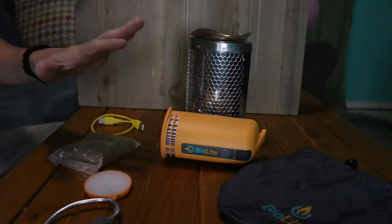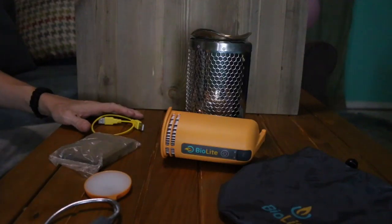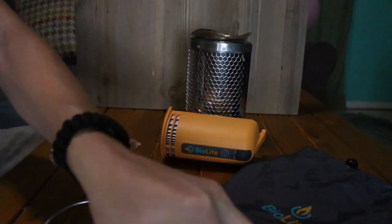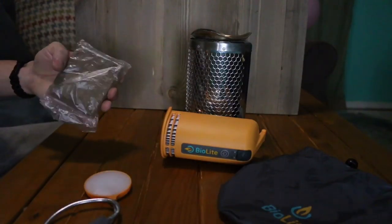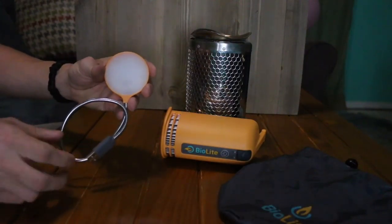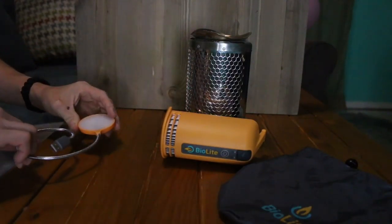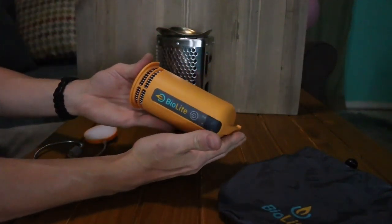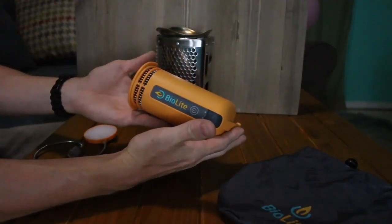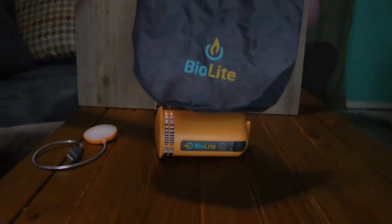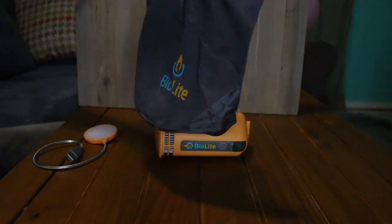So all this right here is what you get in the pack. Let's go over it piece by piece. First off you get a little charging USB cable, you get six fire starters, a USB flex light, the stove itself, the power pack for the stove, and finally its own little travel bag that you can put it in for storage.